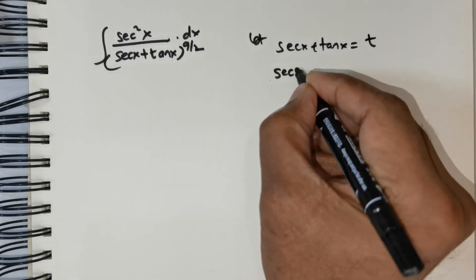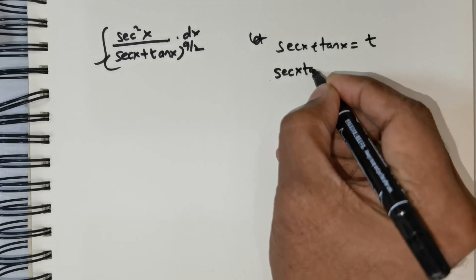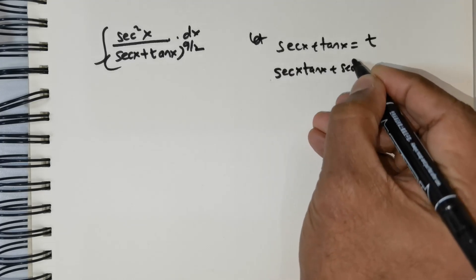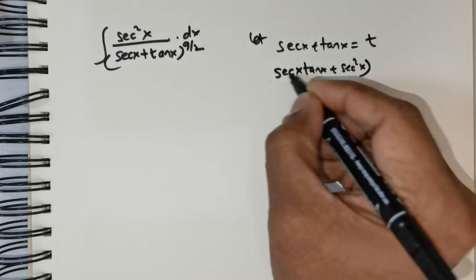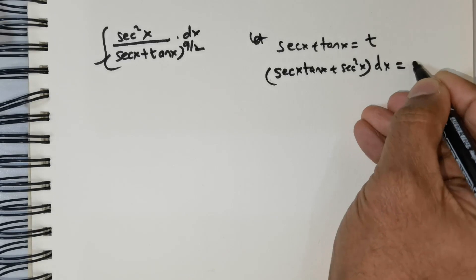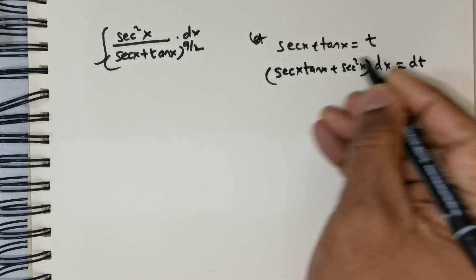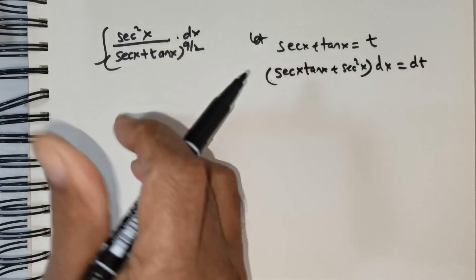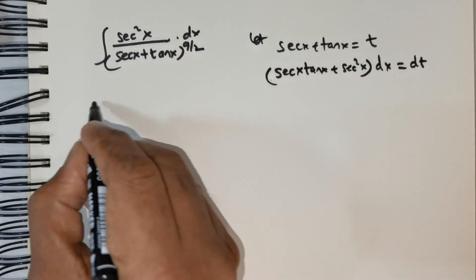When you differentiate secant x you get secant x tan x, and when you differentiate tan x you get secant squared x, multiplied with the differential operator dx. This is equal to dt.